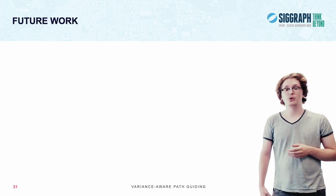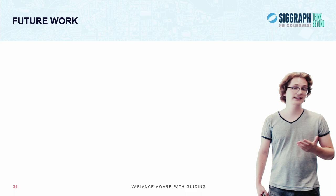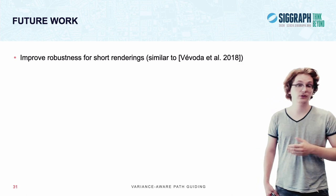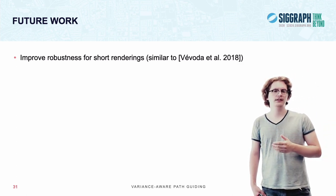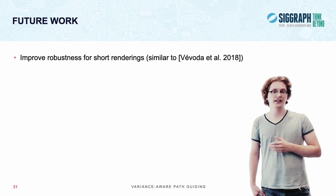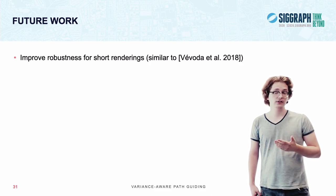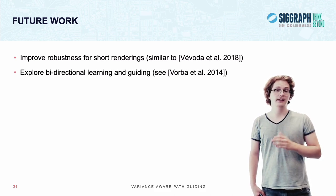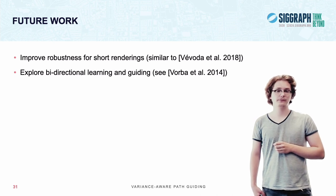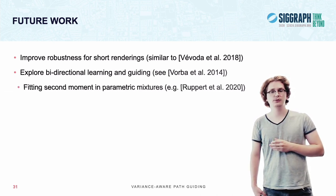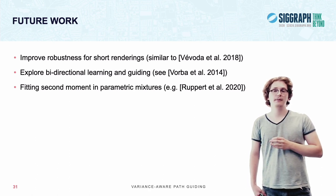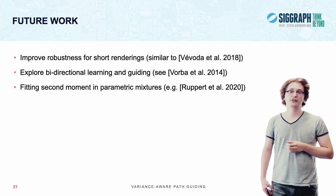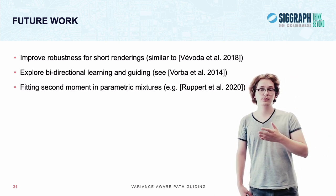Now, obviously, there is also some work that is left to do. For instance, it would be interesting to see if we can improve the robustness of our distribution for shorter renders or even interactive previews, by employing a technique maybe similar to what Vivoda and colleagues do with their Bayesian priors. Also, it would be interesting to see how we can adapt our distribution to the bidirectional setting, like with Vorba's Gaussian mixture model works. And then, last but not least, it would be very interesting to see if we can also make fitting of second moments more robust for parametric mixture models, like Gaussian mixture models or von Mises-Fisher distributions, like presented at SIGGRAPH this year.